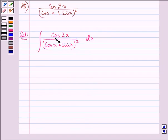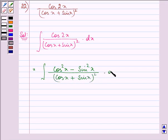Now cos 2x can be written as cos²x - sin²x. So we have (cos²x - sin²x) divided by (cos x + sin x)² dx.